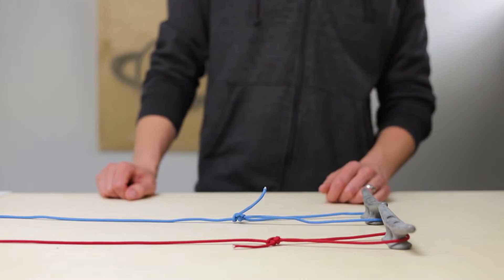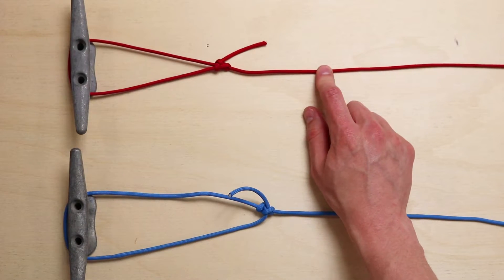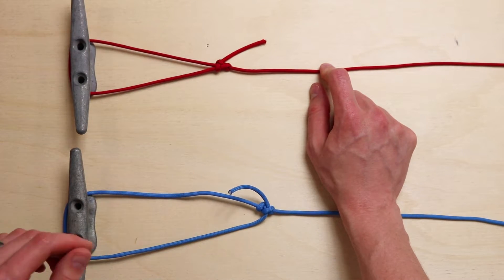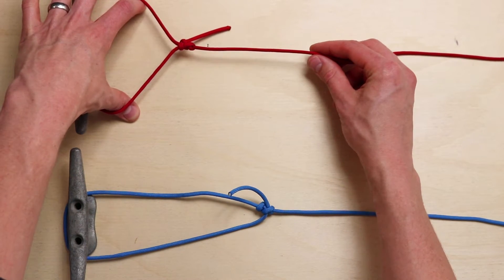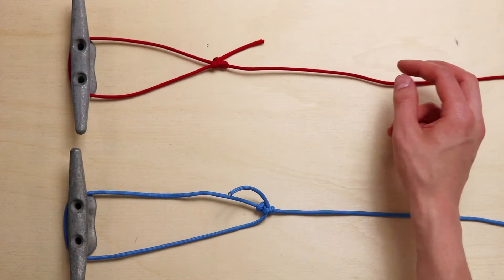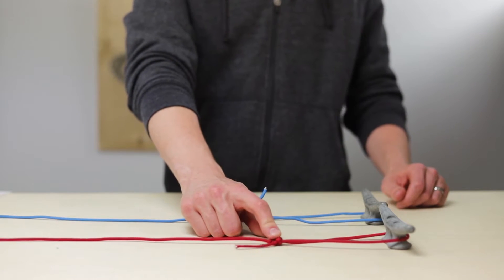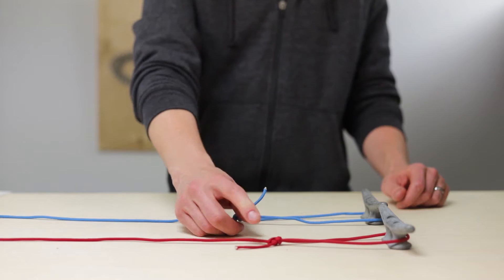So these knots each have different things that are good and bad about them. The adjustable grip hitch like I said can't be tied around wide objects. If you tie it around something wide it's going to slip a lot more easily. It is however easier to remember how to tie for most people although both of these are pretty similar.